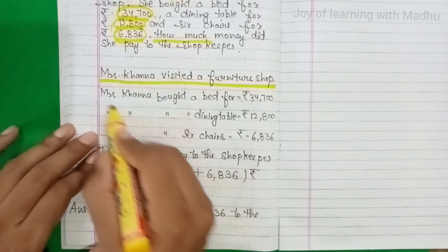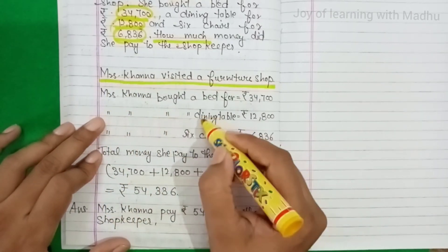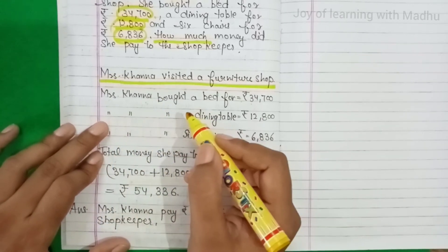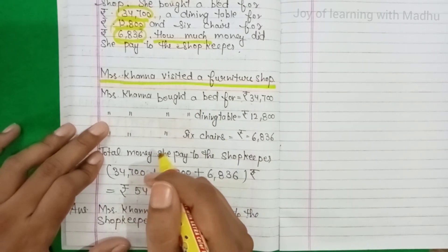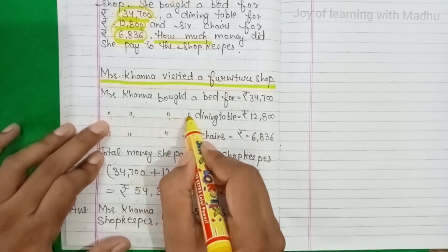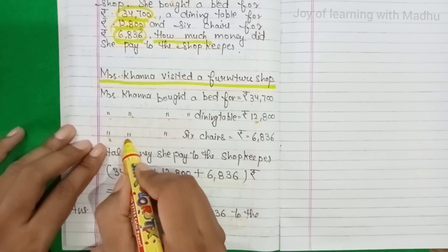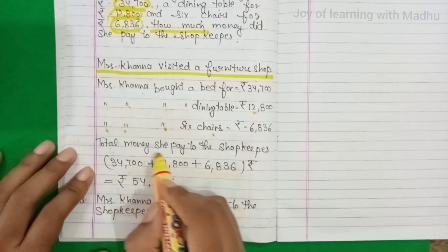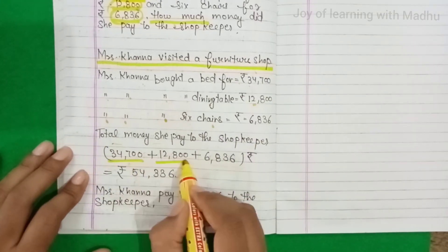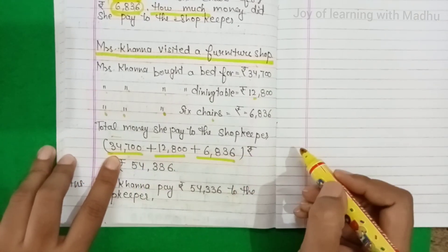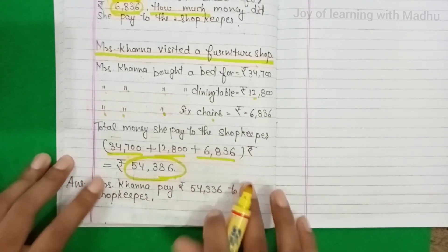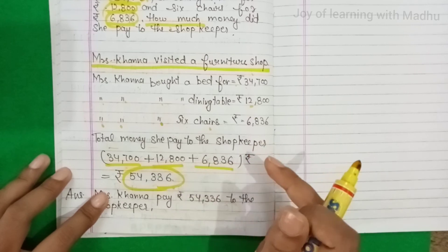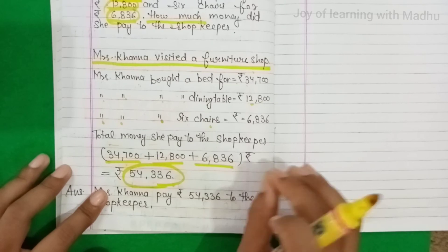Mrs. Khanna bought a dining table for Rs. 12,800, और Mrs. Khanna bought six chairs for Rs. 6,836। Total money she paid to the shopkeeper के लिए तीनों को add करेंगे। Exam में time कम हो तो rough में add करके direct answer लिख सकते हो। Step wise describe करने पर अच्छे marks मिलते हैं।